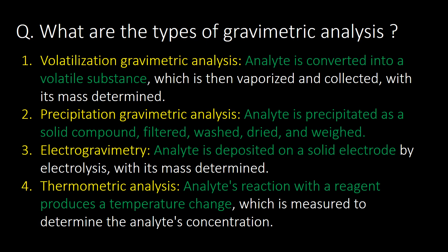Other two methods are electrogravimetric analysis and thermometric analysis. In electrogravimetric analysis, the analyte is deposited on a solid electrode. Whereas in thermometric analysis, the analyte's reaction with a reagent produces a temperature change.